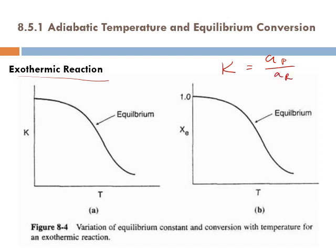We will have less product if we operate at higher temperature, therefore K will be less, and therefore the equilibrium conversion will be less because the equilibrium is shifted backward toward the reactants. Remember, we're talking about equilibrium — the maximum conversion that could be achieved.